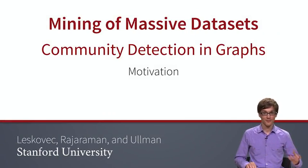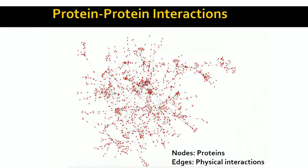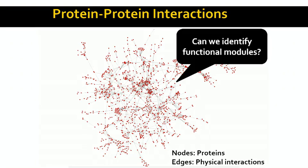Let me give you an example of what I mean by this. Imagine we are given a protein-protein interaction network. In this network, I have proteins in a cell, and I connect two proteins if they interact — basically if they work together in a cell to synthesize various other proteins or regulate things.